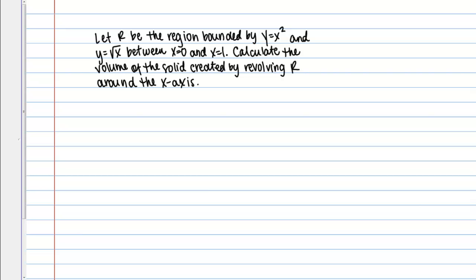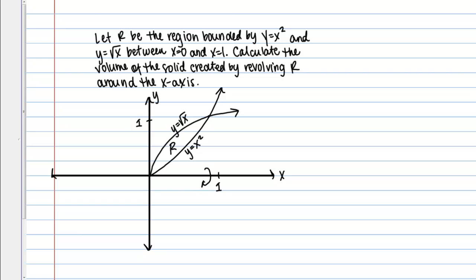The first thing we want to do is sketch our region R. I'm looking at the interval between x = 0 and x = 1, graphing y = x² and y = √x. Y = x² is a parabola that looks like this, and y = √x looks approximately like this. The region bounded between these two curves is our region R, which we're rotating around the x-axis.